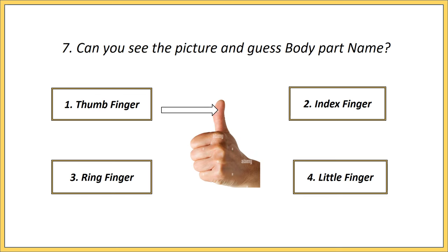Seventh one. Can you see the picture and guess the body part name? Options: thumb finger, index finger, ring finger, little finger. Answer is thumb finger.